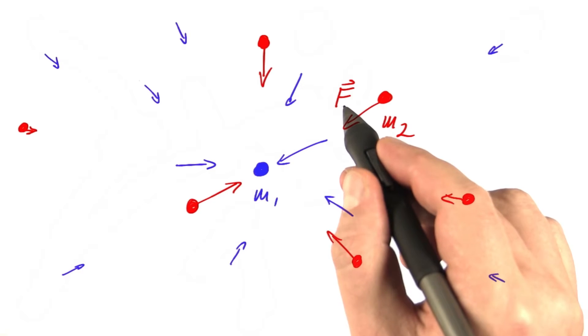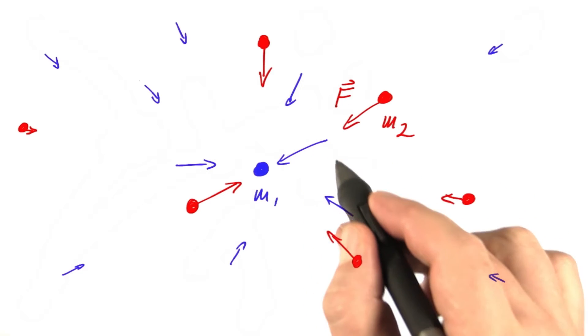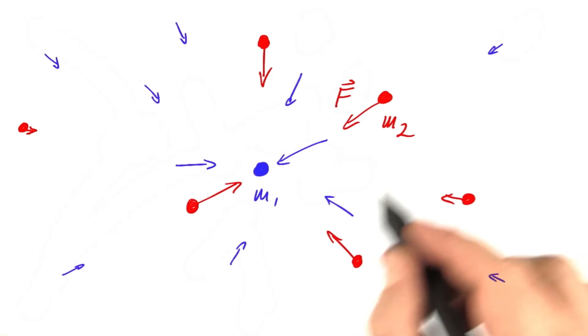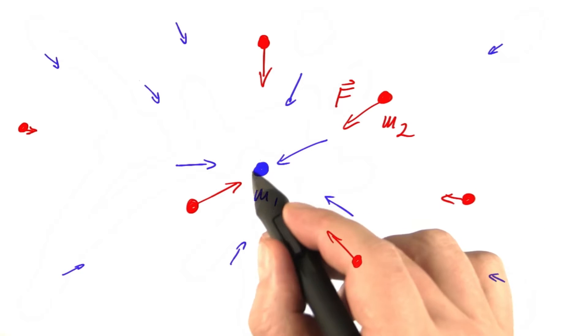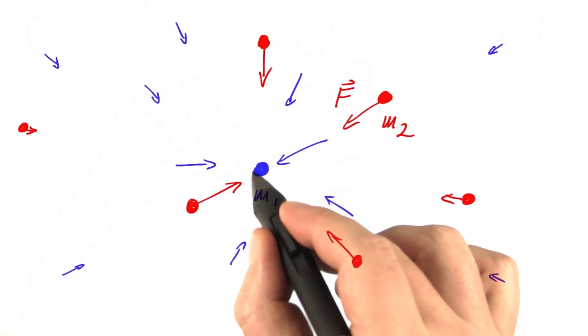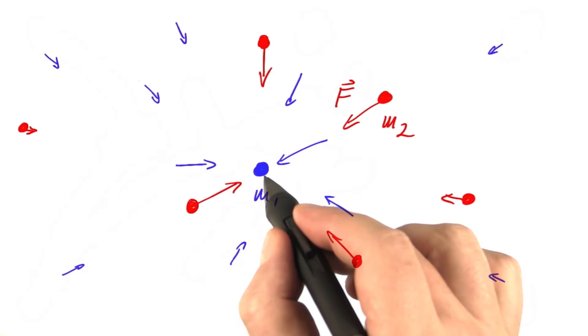When setting force equal to velocity, we're ignoring units of measurement for a moment. To make that work, there has to be a huge drain in the center, so the first mass acts like a cosmic drain.